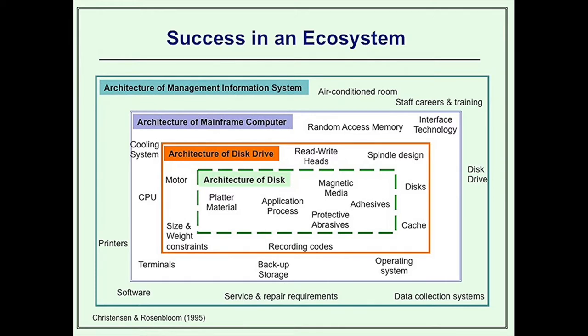Those customers also have customers themselves — perhaps a business putting in place a management information system where the requirements of the mainframe has to fit with that wider ecosystem. As a disk drive manufacturer, you are quite rightly focused onto the needs of your customers who in turn are focused onto the needs of their customers. So if a new innovation comes along that does not match those needs, you're not going to see it as crucial to your future. Christensen calls this ecosystem a value network.